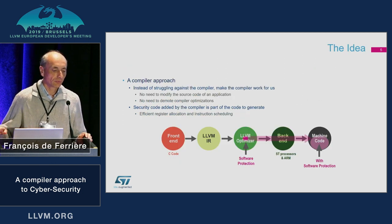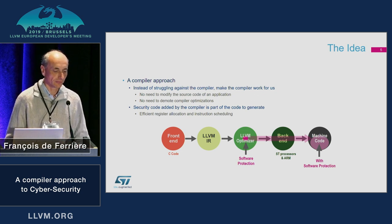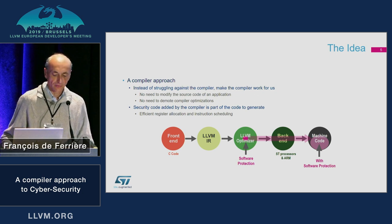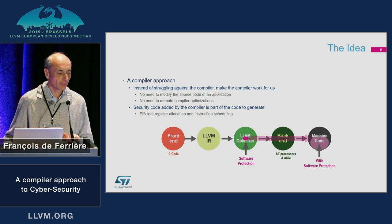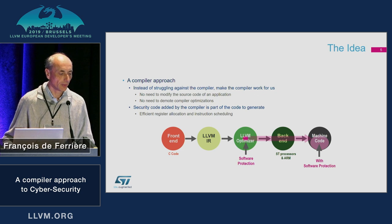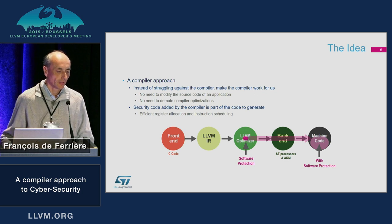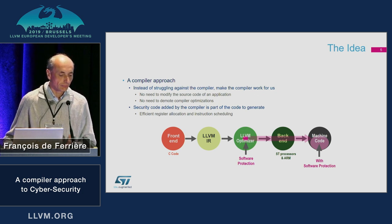Our idea is to implement these protections inside the compiler instead of inside the application or in the assembly code. In this way, we don't have to struggle with the compiler because we can do these transformations in the compiler, and the compiler will not remove these transformations. These transformations added inside the compiler will be efficiently generated as part of the final code, optimized during register allocation and instruction scheduling.